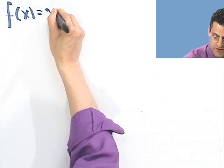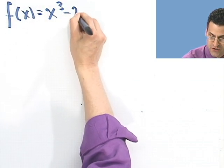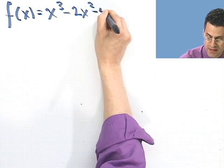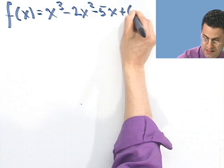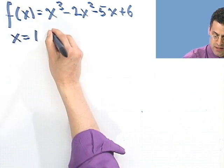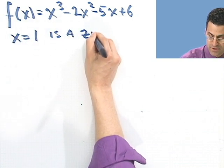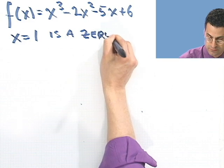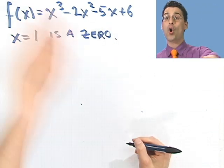f(x) equals x cubed minus 2x squared minus 5x plus 6. And I tell you that x equals 1 is a zero of this. Now I want you to find all the zeros.